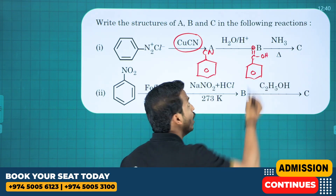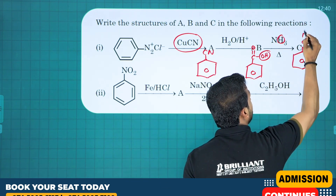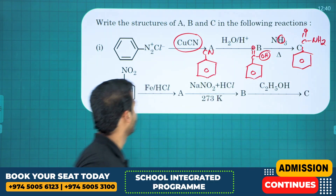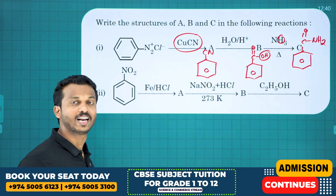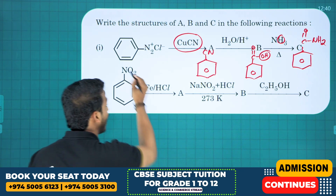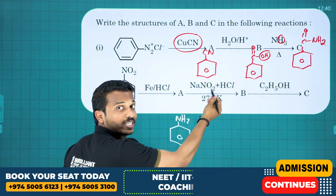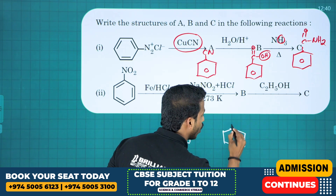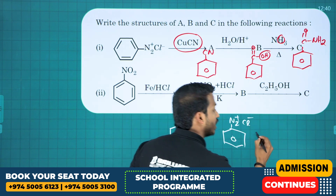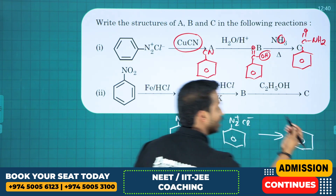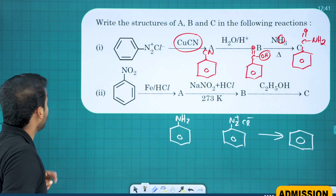Benzoic acid heated with ammonia: the OH and H are removed, giving amide — that is benzamide (C6H5-CO-NH2). Next, a nitro group on reduction with Sn/HCl or Fe/HCl gives aniline. Aniline on diazotization with NaNO2 and HCl gives diazonium salt (N2+Cl-). Benzene diazonium chloride treated with ethanol gives benzene.